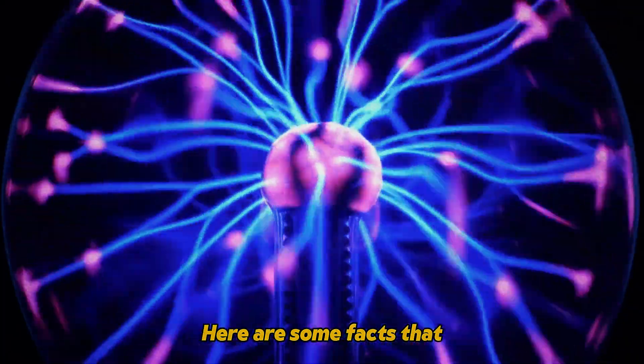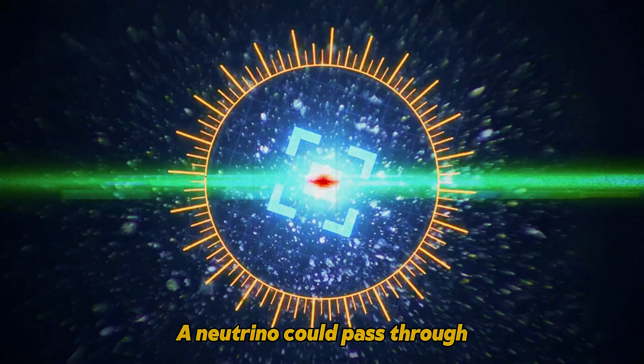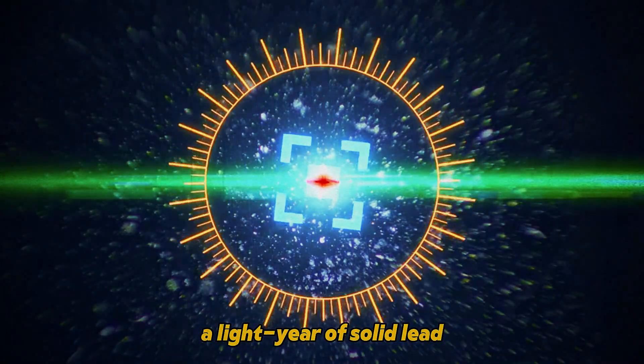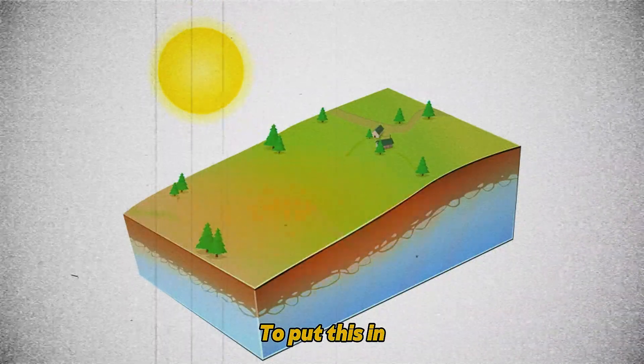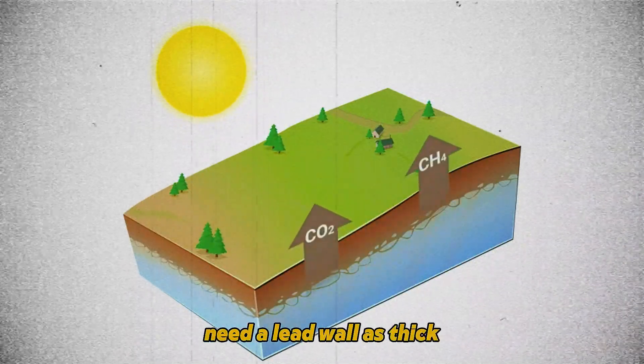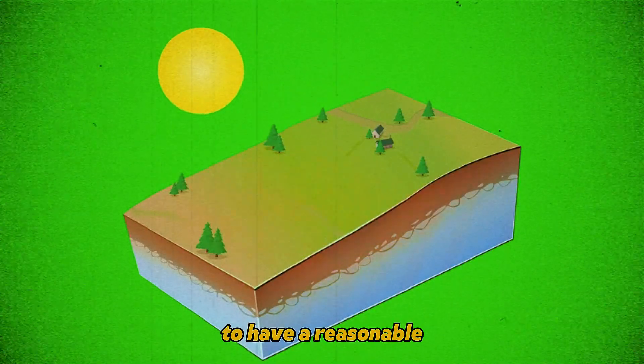Here are some facts that leave even the most experienced physicists speechless. A neutrino could pass through a light year of solid lead without being stopped. To put this in perspective, you would need a lead wall as thick as an entire solar system to have a reasonable chance of stopping a neutrino.